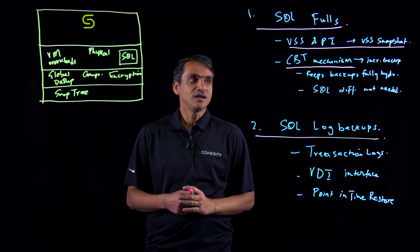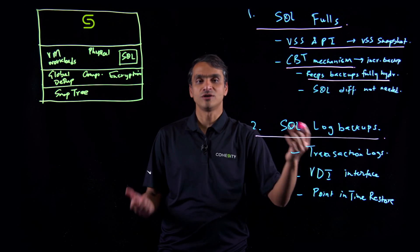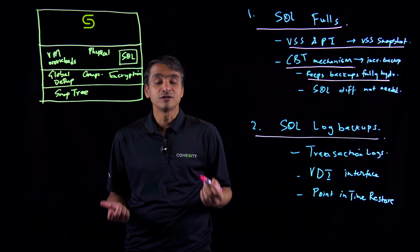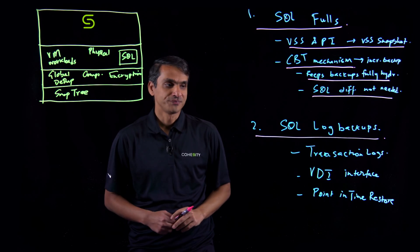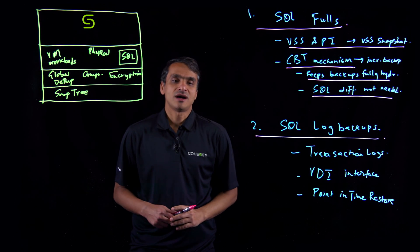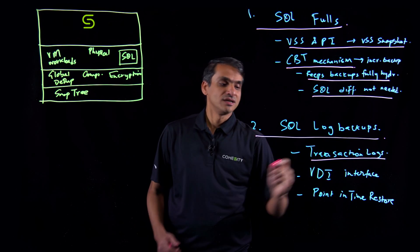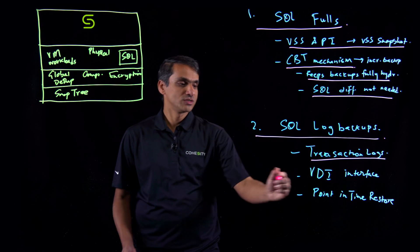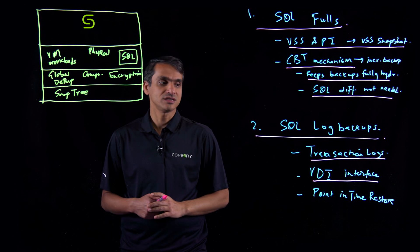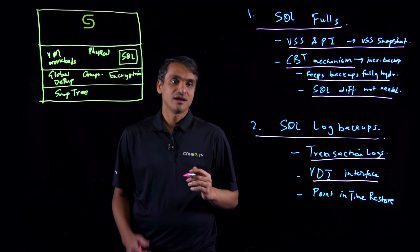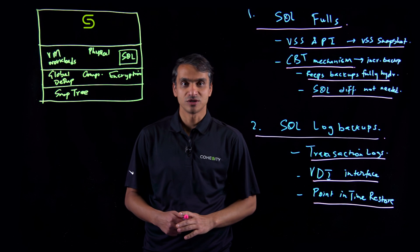Why do we do that? Because it keeps the backups fully hydrated on Cohesity and eliminates the need for SQL differential backups. SQL log backups are needed to back up transaction logs — in this case we use the VDI interface — and these log backups can be used for point-in-time restores.